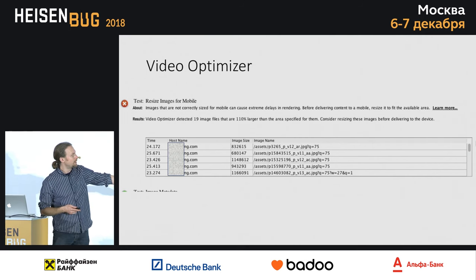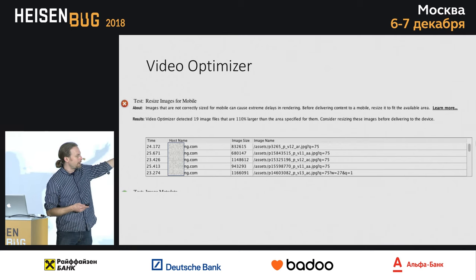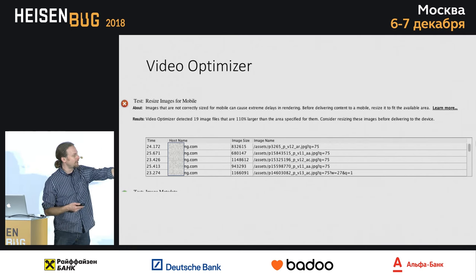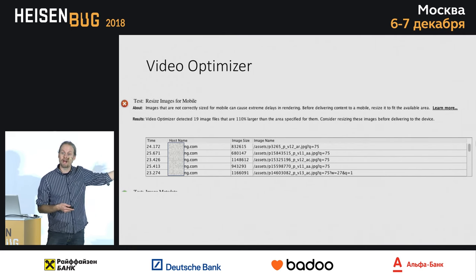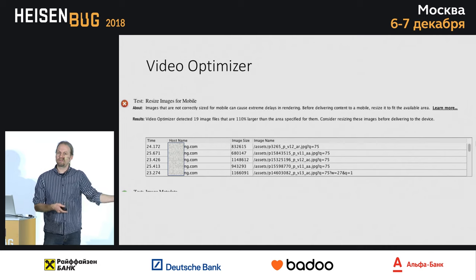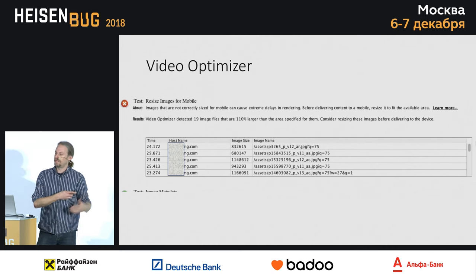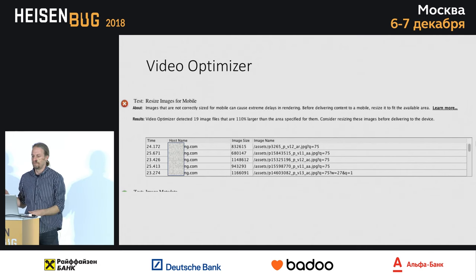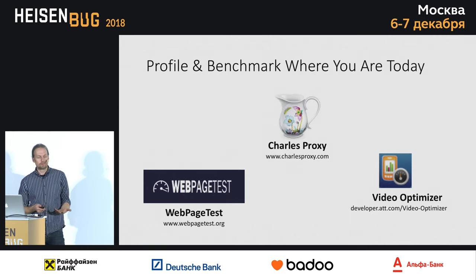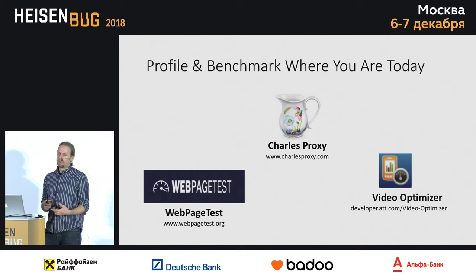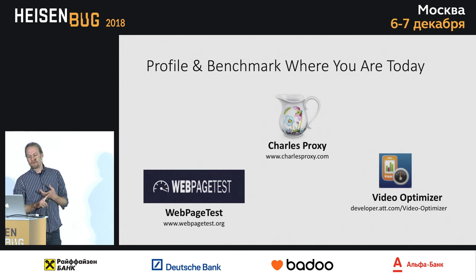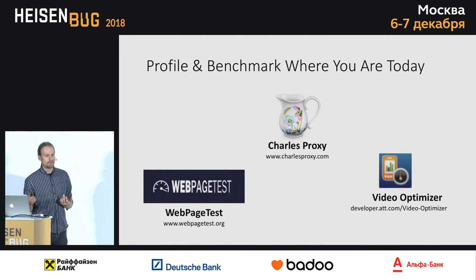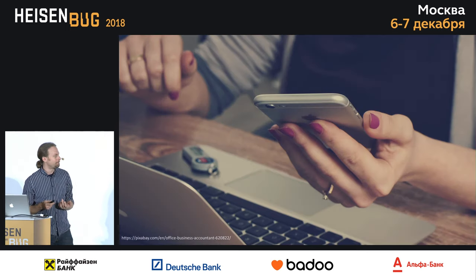With these best practices, it actually identifies the specific assets you can go back and optimize, so they download faster and make your application appear faster. So now we know what we need to do for fast, we have some tools, and we can start testing.